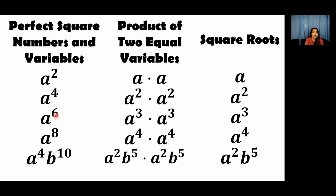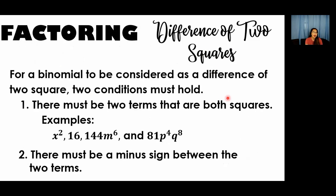So exponents 2, 4, 6, 8, 10, 12 — again, variables with these exponents can be considered perfect square variables. Variables having an exponent divisible by 2 are those variables that are perfect squares. Now, how do we determine if a binomial is a difference of two squares? For a binomial to be considered a difference of two squares, two conditions must hold. First, there must be two terms that are both perfect squares — meaning both terms must have a square root.